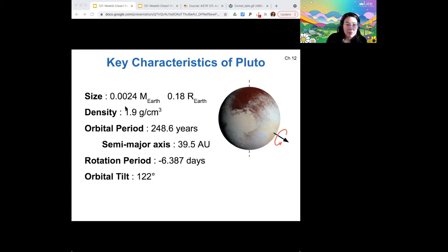Which is why we wouldn't classify it as a terrestrial planet anymore. It has a long orbital period because of its large semi-major axis. It's far from the sun, therefore orbits very slowly. And as you can see, it has a pretty extreme orbital tilt and rotates around every six days.